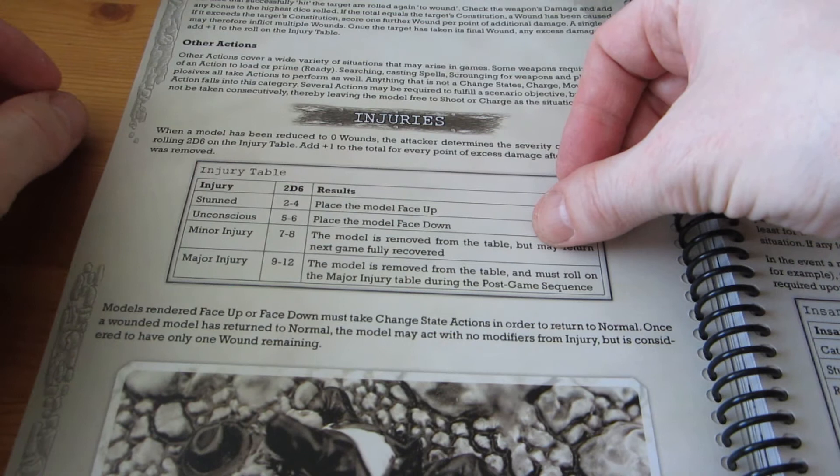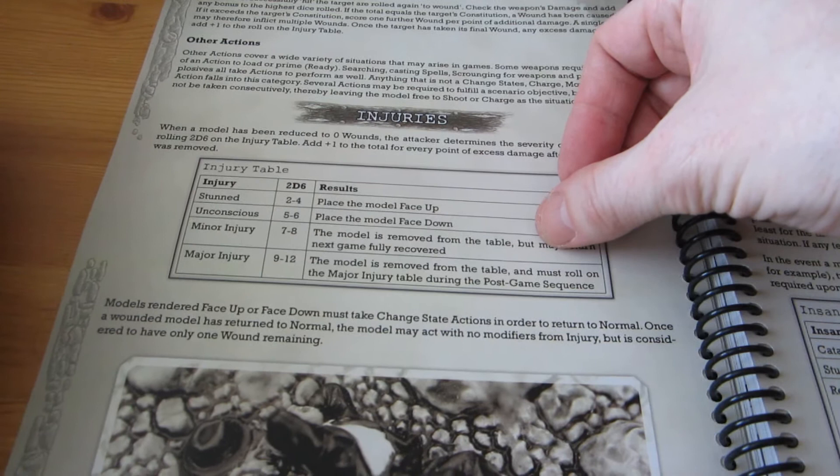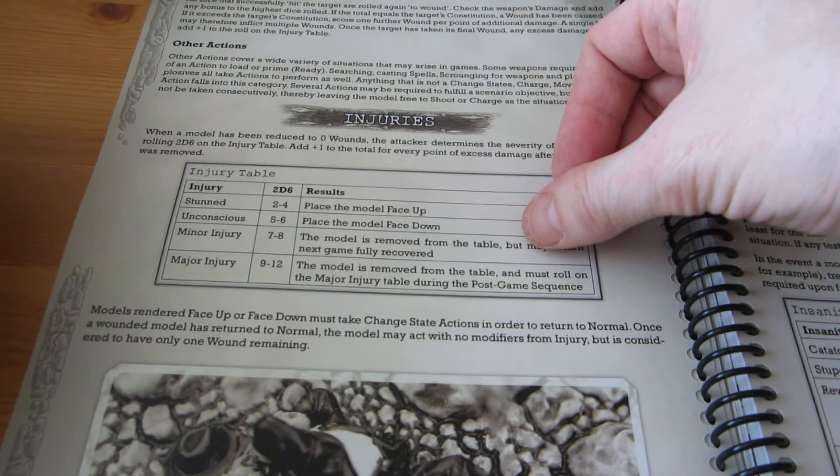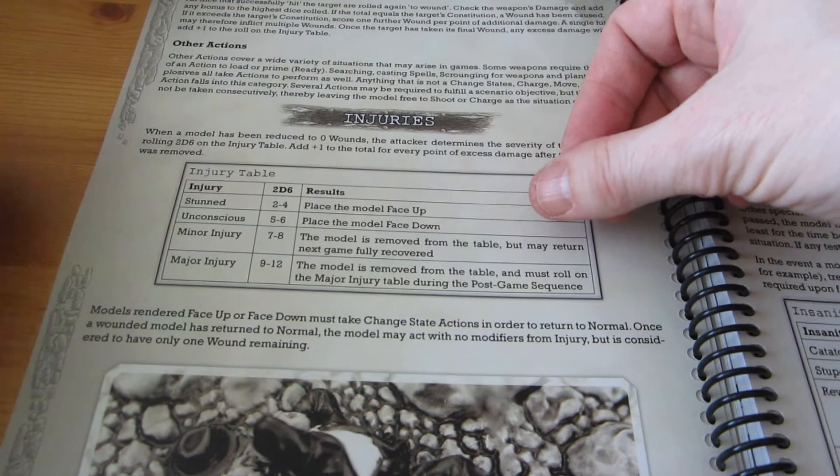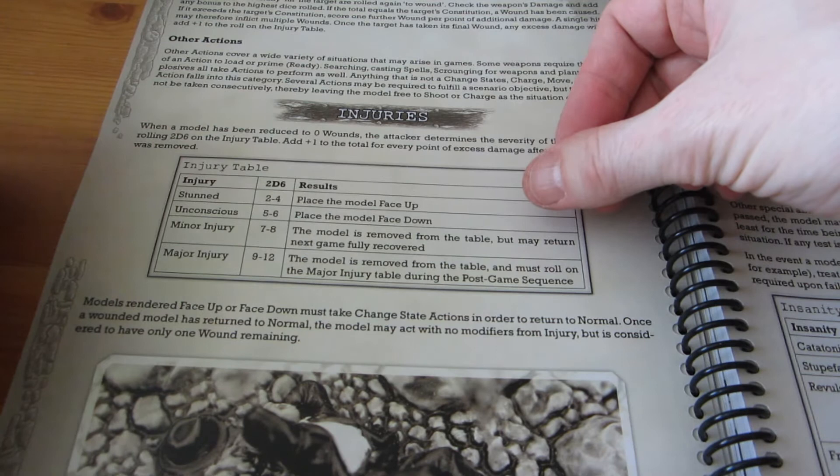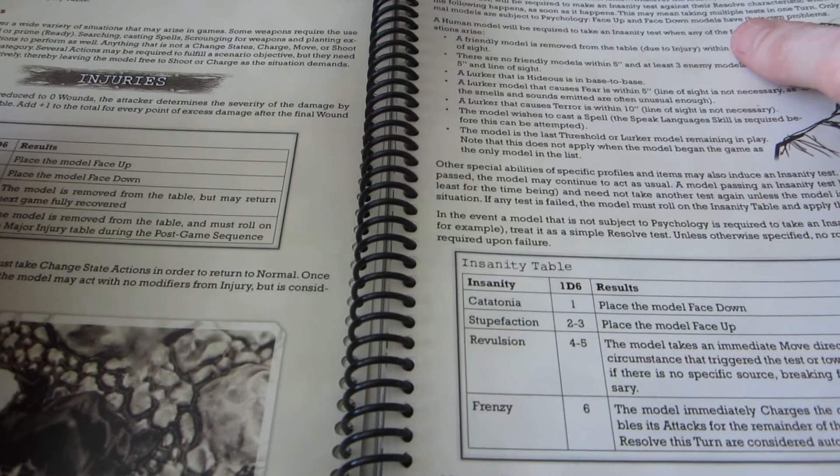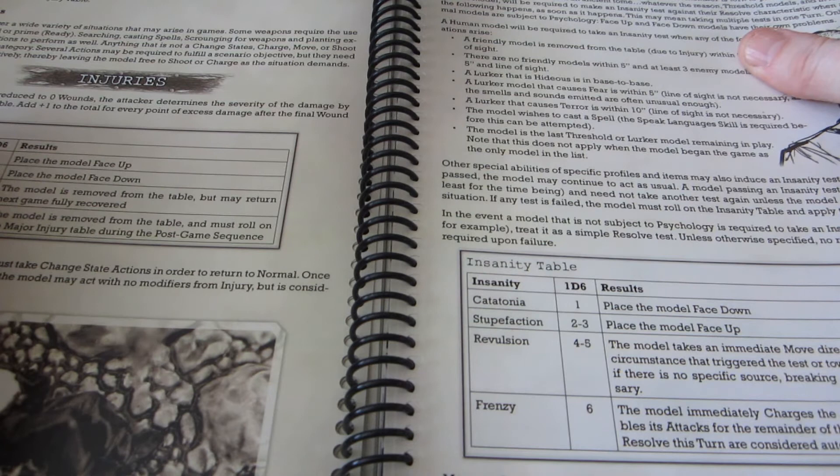So that adds an extra step to the proceedings. And you might notice that there is relatively a lot of math in this game. You need to do a lot of adding and subtracting at the table. I think this is balanced out by the fact that the model count is so low. I mean in the example game at the end of the book, the threshold player has three models and the lurker player has four. And that's it. So I think games will go by pretty quickly anyway.